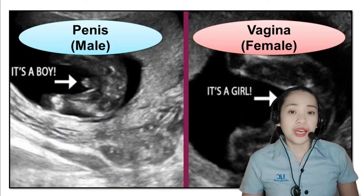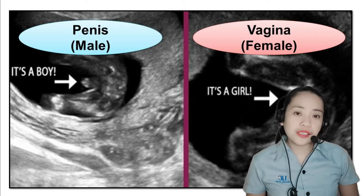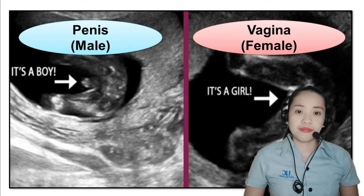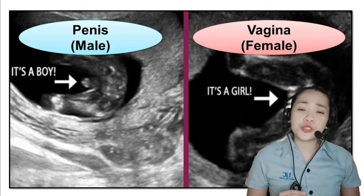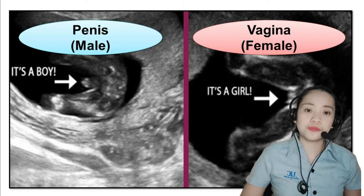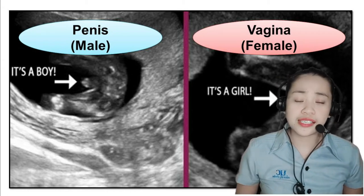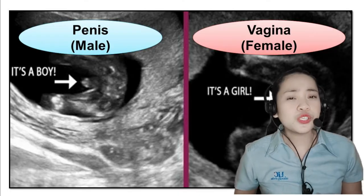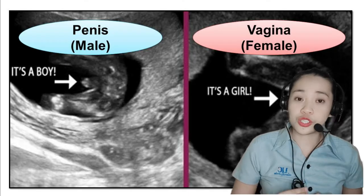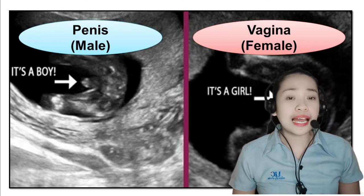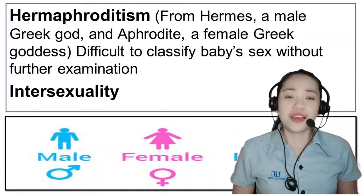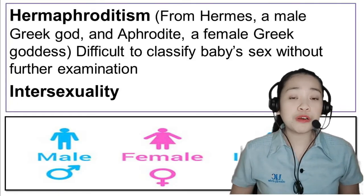If at birth the child is observed to have a penis and testicles, then the child is categorized as male. If on the other hand the child is observed to have a vagina, then the child is categorized as female. However, there are cases when the baby's genitals appear to be a conglomerate of male and female organs, such that it may be difficult to classify the baby's sex without further examination. In the past, this condition is referred to as hermaphroditism.